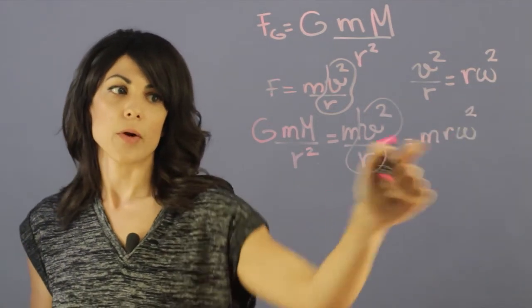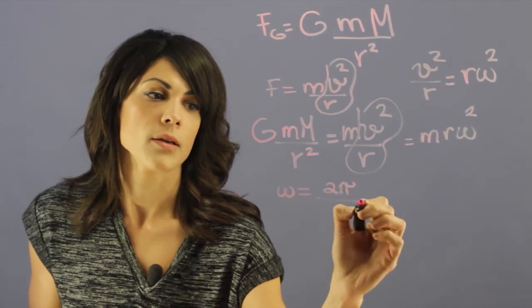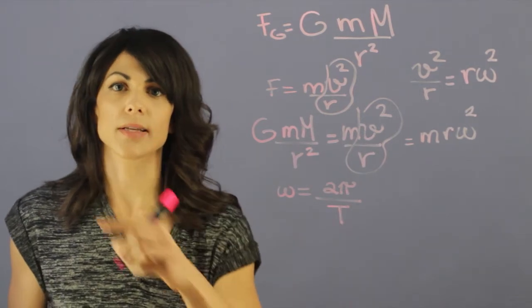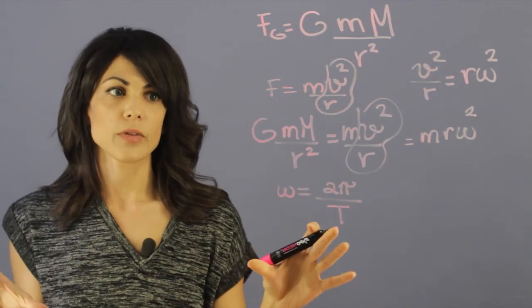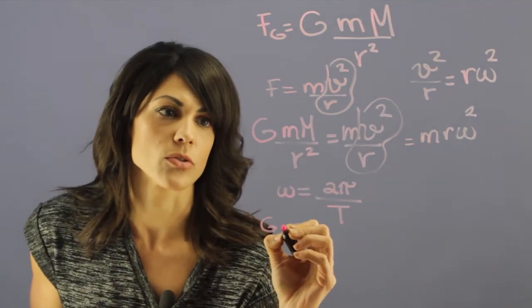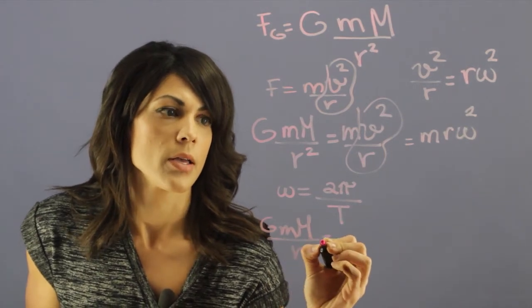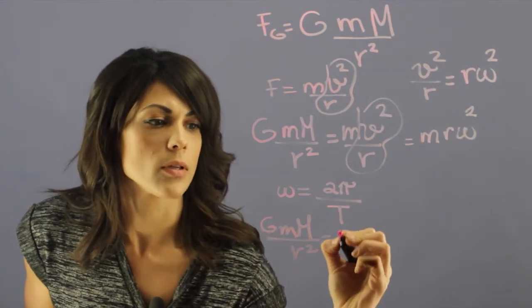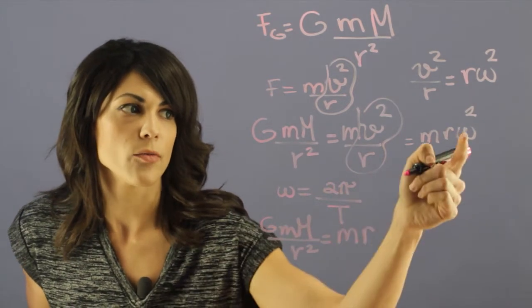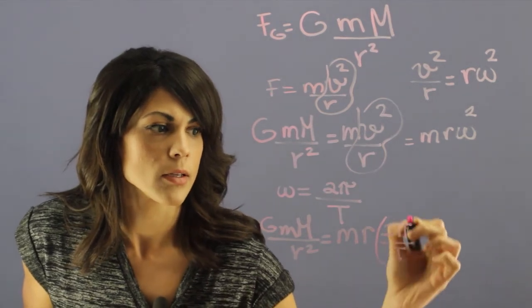We also know that omega is equal to 2 pi divided by the period. So this is the period that it takes the moon to go around the planet. Now putting all of this together we can get a new relation. So GmM over r squared is equal to mr, and then we'll plug this in for omega squared. So we have 2 pi divided by t squared.